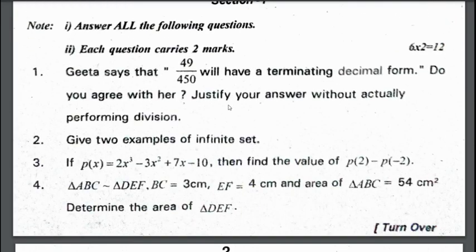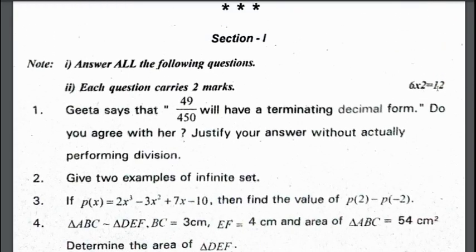First section 1. Section 1 has 6 questions, 2 marks each question, 12 marks weightage. So Geeta says that 49 by 450 will have a terminating decimal form. Do you agree with her? Justify your answer without actually performing division.